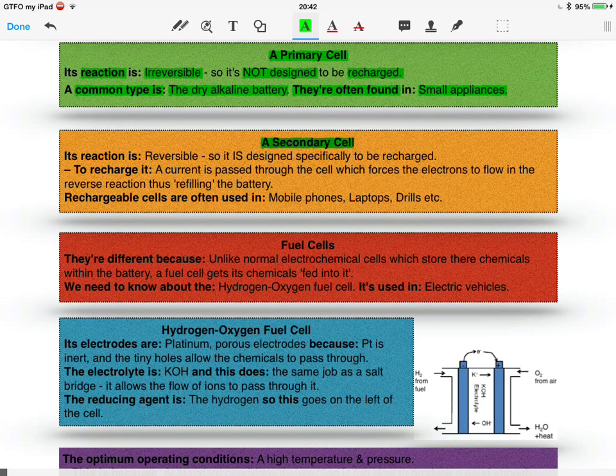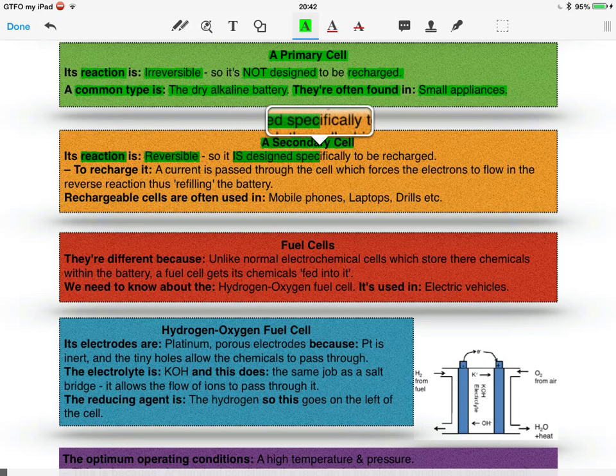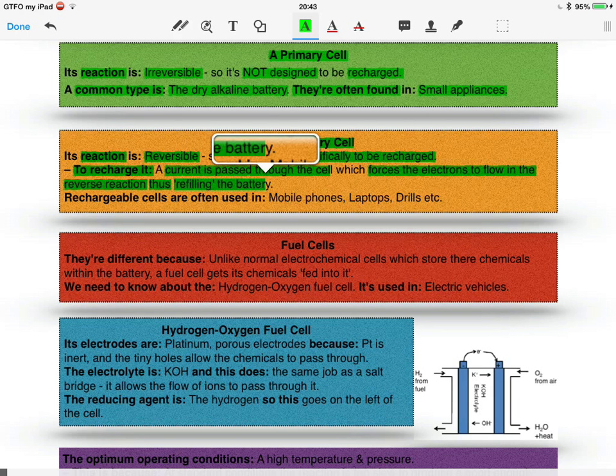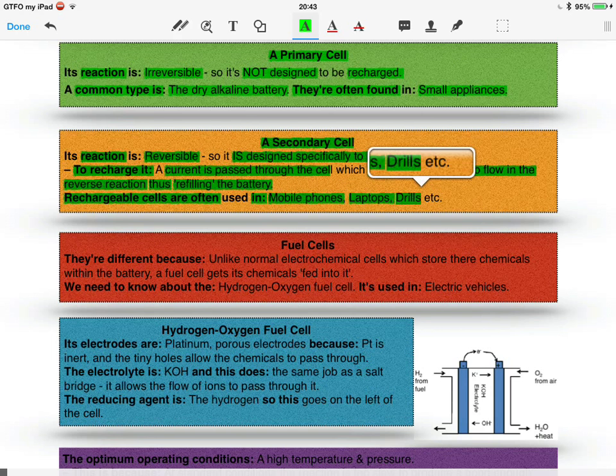Next, we have a secondary cell. The reaction of this is reversible, and that means it's designed specifically to be recharged. To recharge it, a current is passed through the cell which forces the electrons to flow in the reverse reaction, thus refilling the battery. Rechargeable cells are often used in mobile phones, laptops, drills, etc.